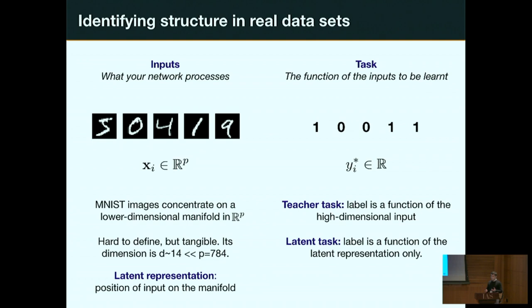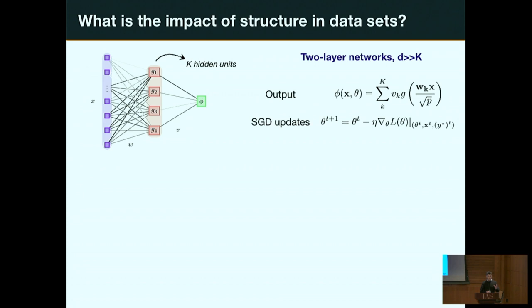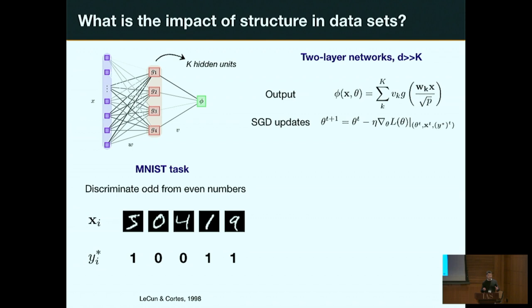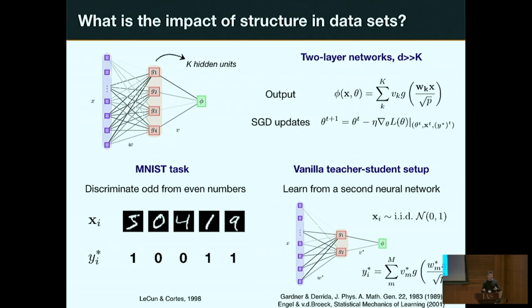Let me show how these two types of structure show up in neural network performance and dynamics. Consider two-layer neural networks with a large input layer and k hidden units, trained using SGD. I train them on two problems: the MNIST odd-even discrimination task, and the vanilla teacher-student task — a random function of random Gaussian inputs generated by feeding those inputs through a random neural network called the teacher.